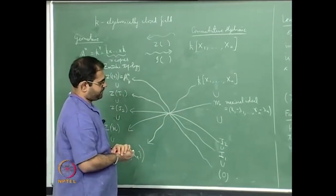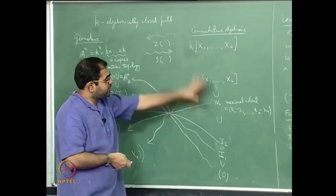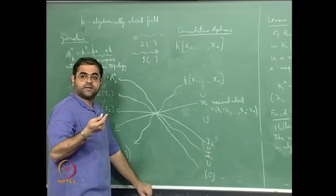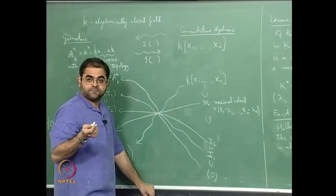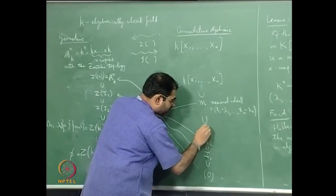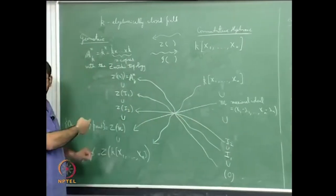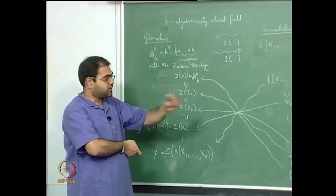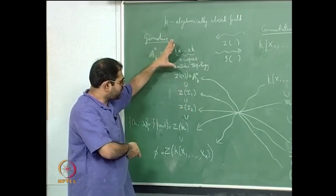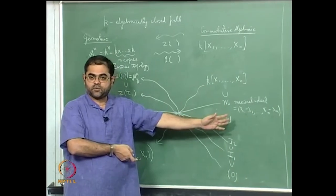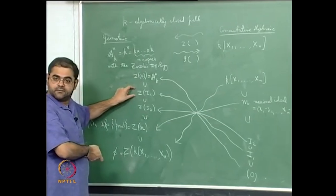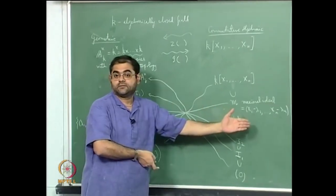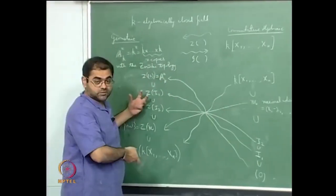Now there is a question one can ask from the commutative algebra side. Maximal ideals have come up; the other important ideals are the prime ideals. You can ask: if you have a prime ideal on the algebra side, what is special about the zero set on the geometry side? Once you start building this dictionary, you can take algebraic properties and ask what they correspond to geometrically.